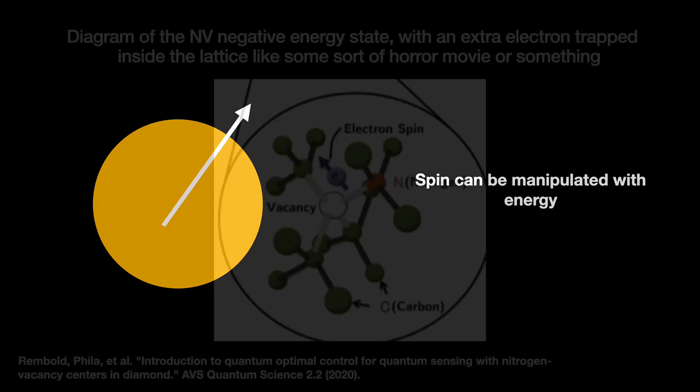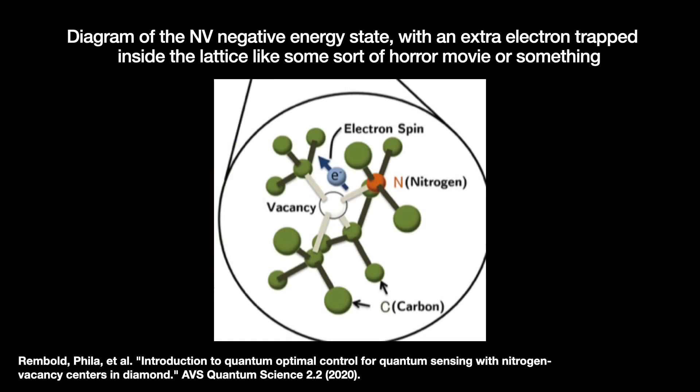There are no classical physics metaphors that our primitive monkey brains can employ to understand it. Four, and quite important to our journey here, we can manipulate the spin using energy, most often in the form of microwave or laser pulses. Five, so here is where we are now. The diamond's NV negative center has a spin associated with it. And we can use energy to essentially set, quote unquote, that spin to a certain value.